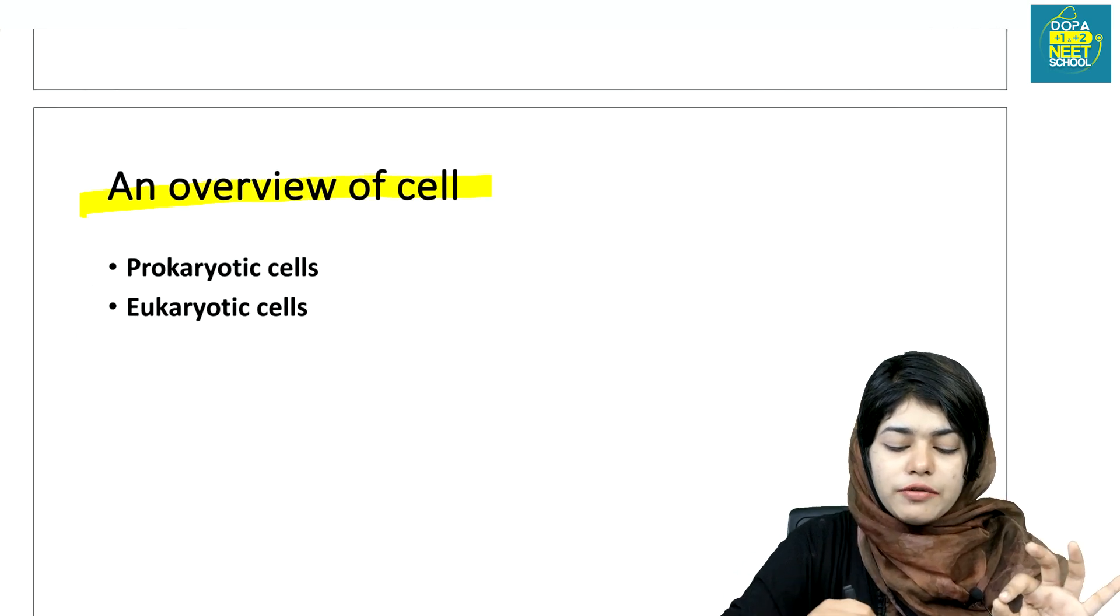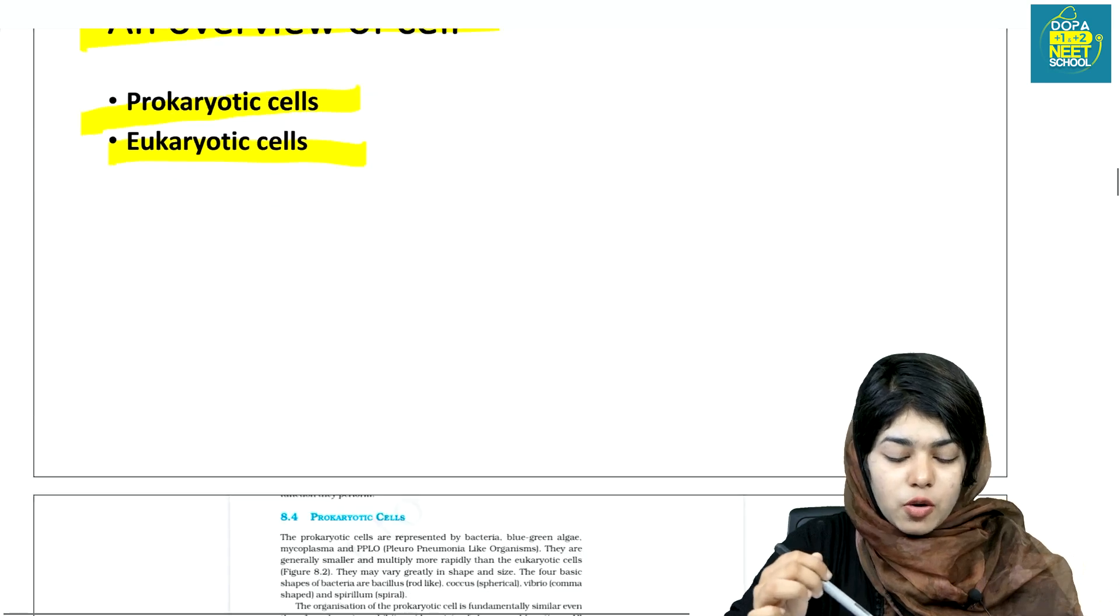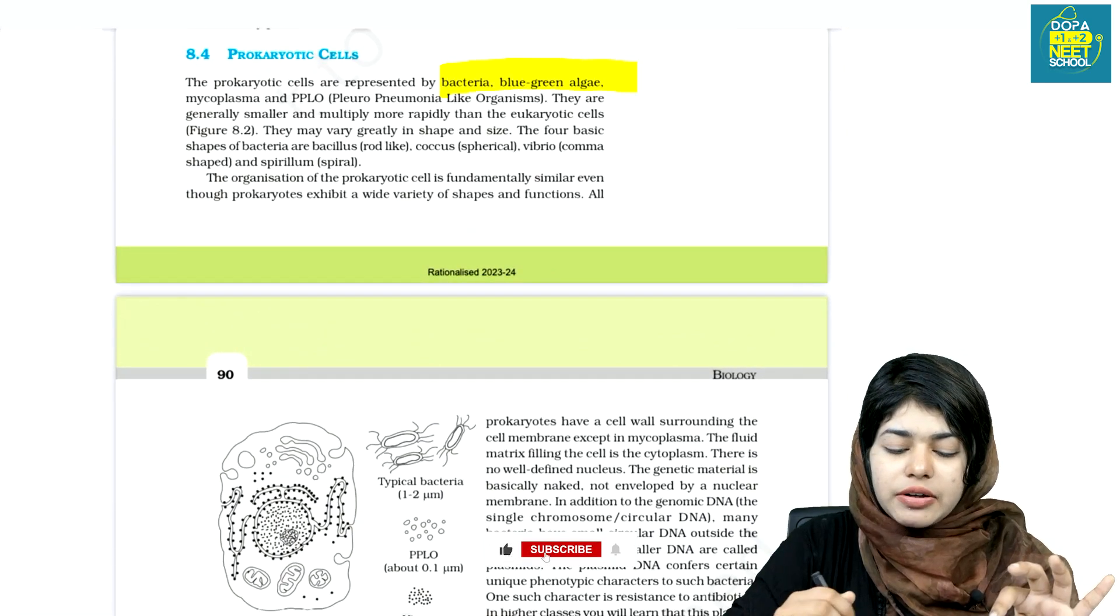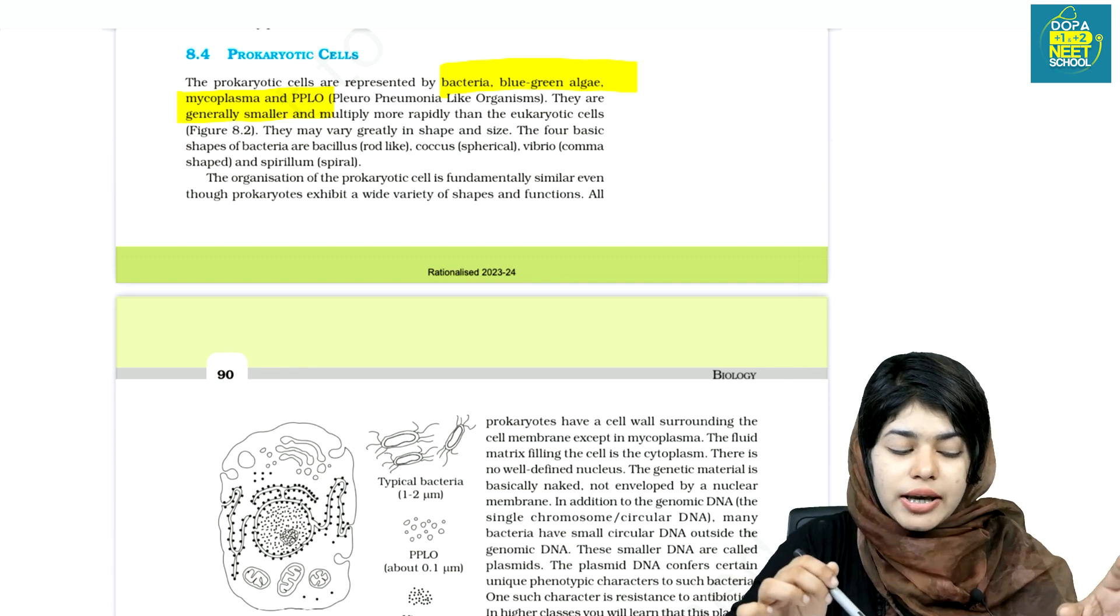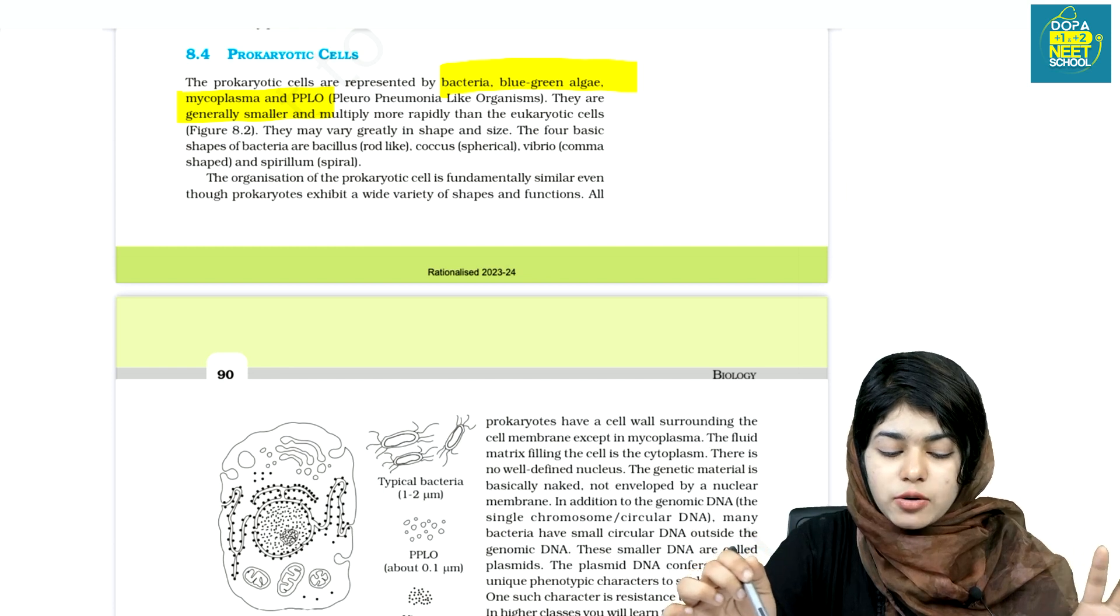Let's look at the overview of cells. Prokaryotic cells and eukaryotic cells. Prokaryotic cells include bacteria, blue-green algae, mycoplasma, and pleuro-pneumonia-like organisms.